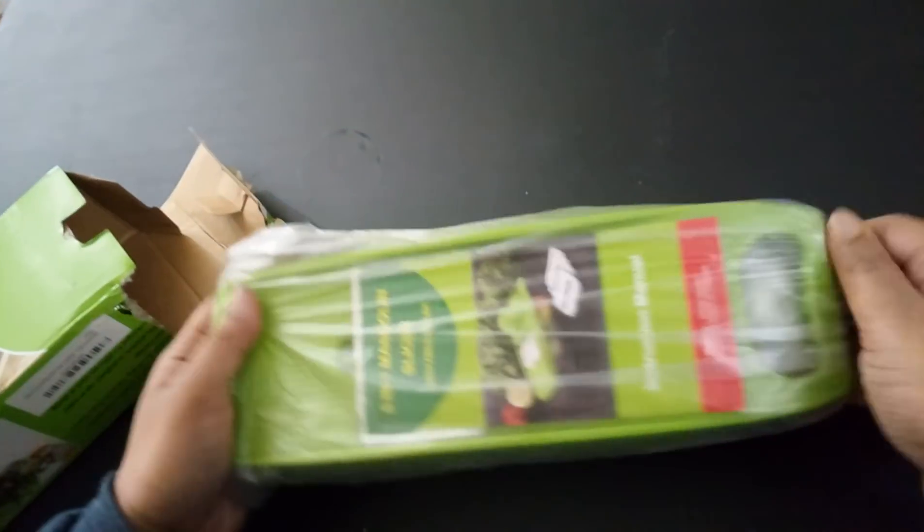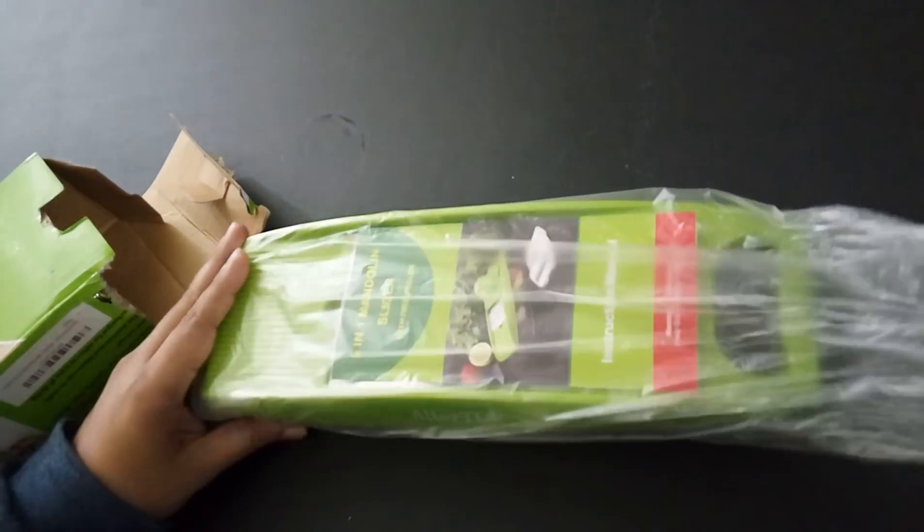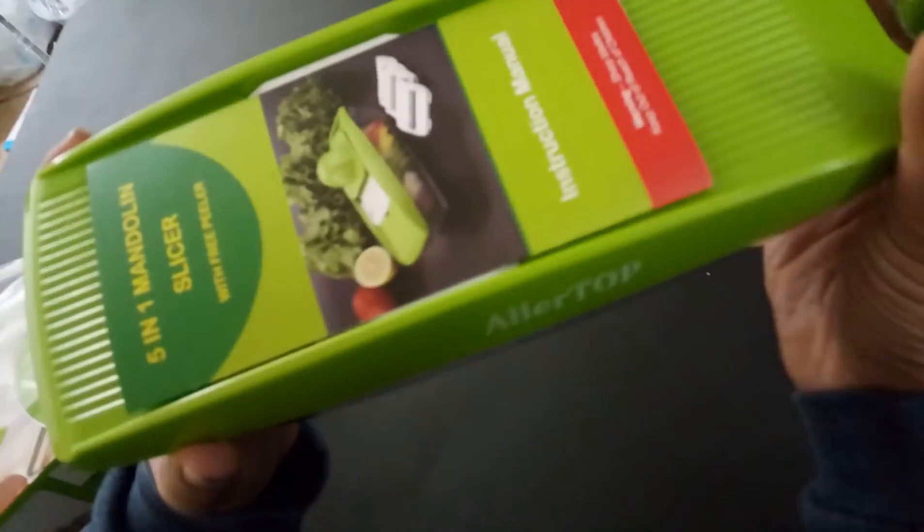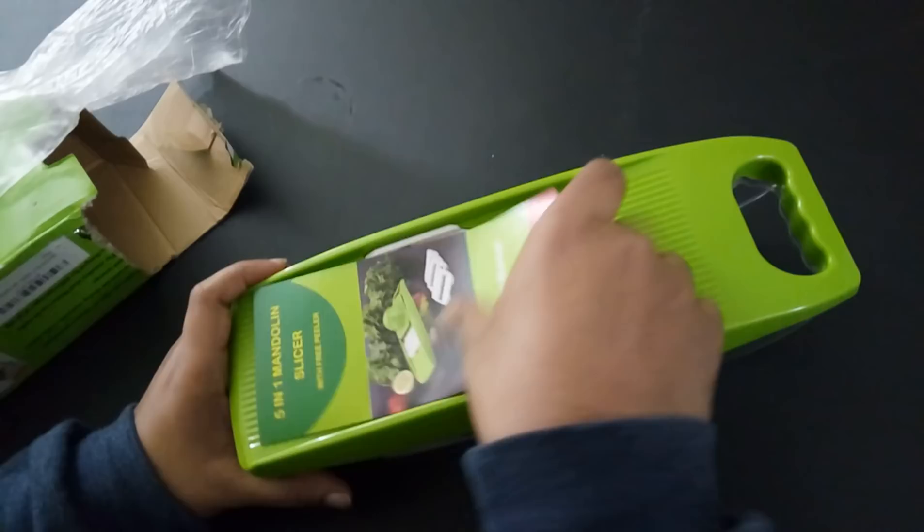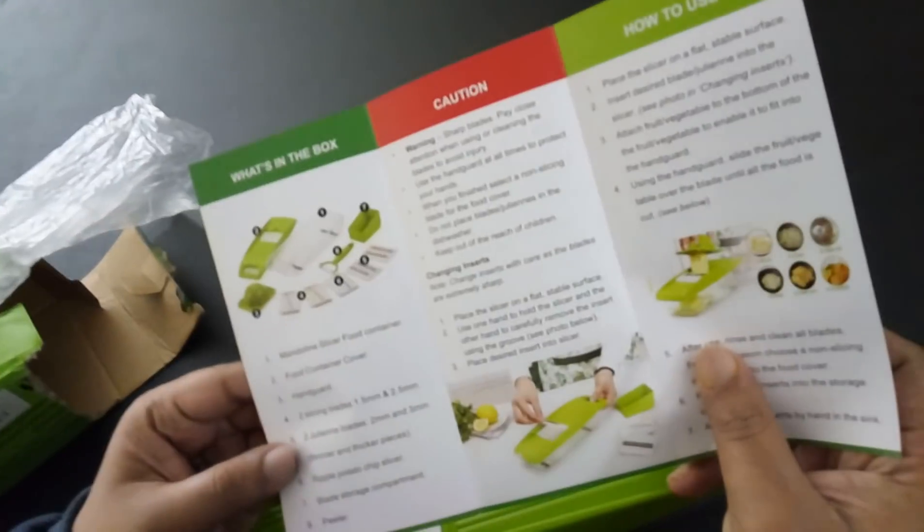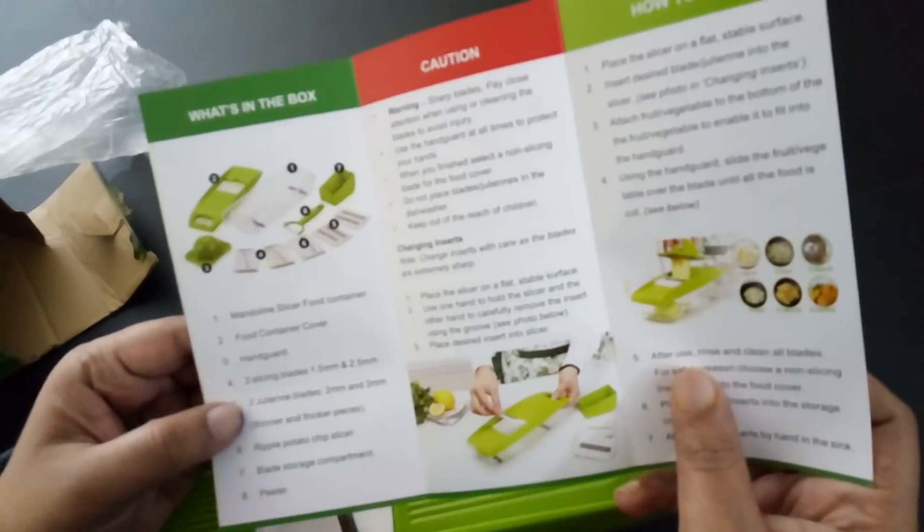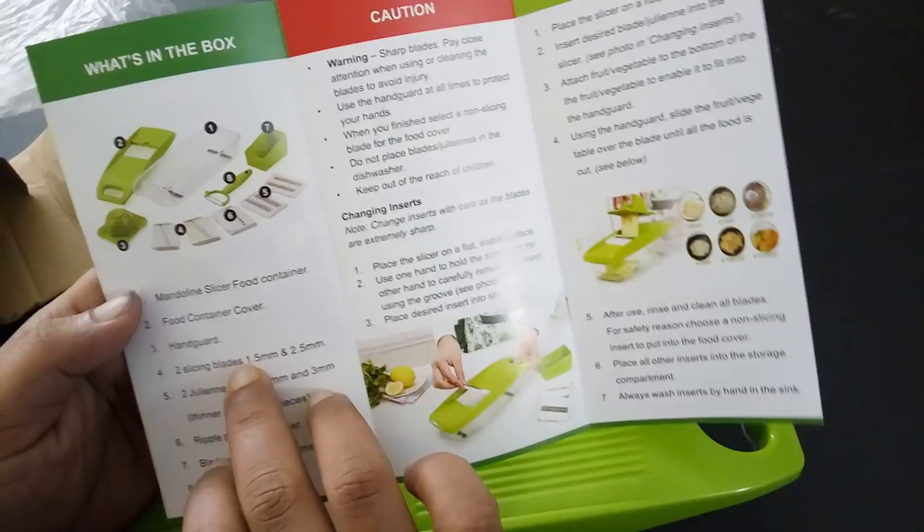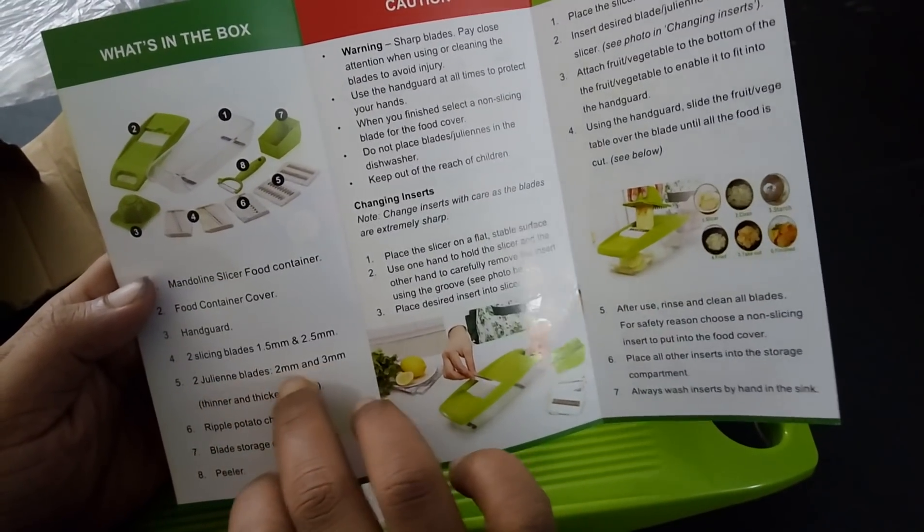Here is the mandolin slicer. As you can see, this is very cool and it's compact. Provided an instruction manual over here. You can see the mandolin slicer, food container, it has a cover over here, and it has two slicing blades, two julienne blades which are of thickness 2 millimeter and 3 millimeter, and a ripple potato chip slicer as well.